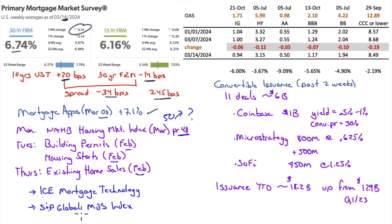Let's take a look at S&P Global's MBS index and ICE Mortgage Technology. They have a nice report out for March. Spreads continue to contract: 94 basis points on investment grade, high yield at 315. Triple-C at 8.49%, double-B under 200 now at 1.94.